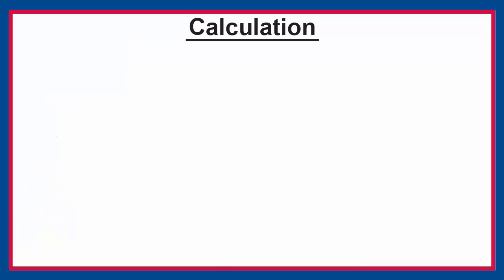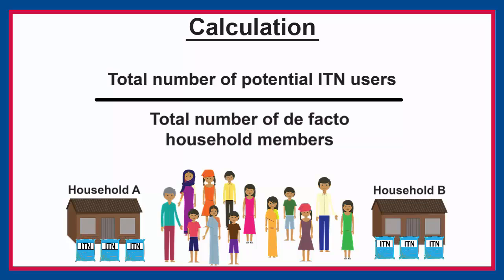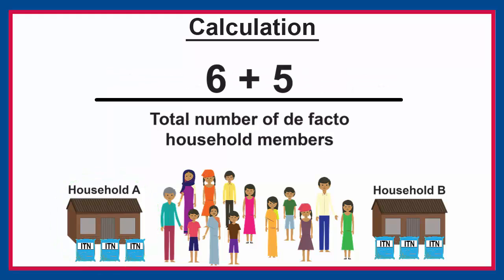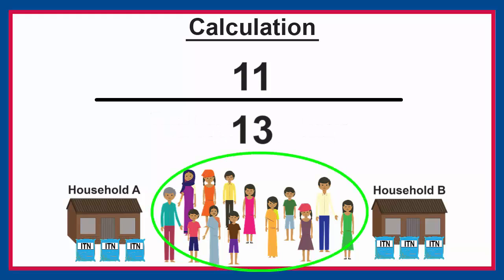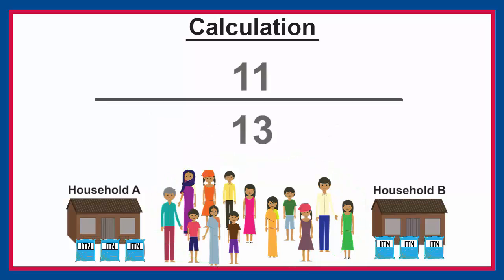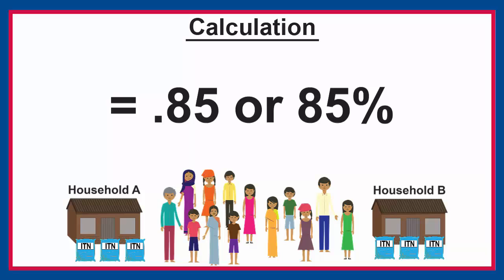Remember that ITN access is a population-level indicator. So let's pretend that Household A and Household B were the entire population in our survey. First, we calculate the total number of potential ITN users: we add 6 potential users from Household A to the 5 potential users from Household B, for a total of 11 potential ITN users. Now we divide 11 by 13, which is the total number of individuals who stayed in the households the previous night. 11 divided by 13 is 0.85, or 85%. In this hypothetical example, 85% of the population has access to an ITN.